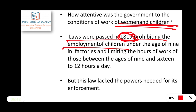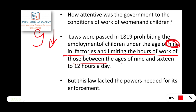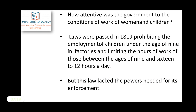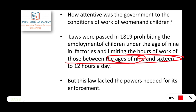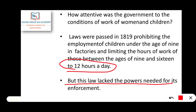The 1819 law prohibited the employment of children under the age of 9 in factories and limited the working hours of those between the age of 9 and 16 to 12 hours a day. However, this law lacked the powers needed for its enforcement — there was a significant implementation deficit.